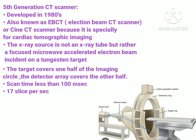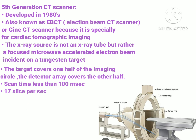The fifth generation CT scanner was developed in the 1980s. It is the first imaging CT scanner also known as EBCT — Electron Beam CT Scanner — or cine CT scanner, because it is specially designed for cardiac tomographic imaging, meaning only the heart can be imaged. The X-ray source is not an X-ray tube but rather a focused microwave-accelerated electron beam incident on a tungsten target. The target covers one half of the imaging circle and the detector array covers the other half. Scan time is less than 100 milliseconds, with 17 slices projected per second.